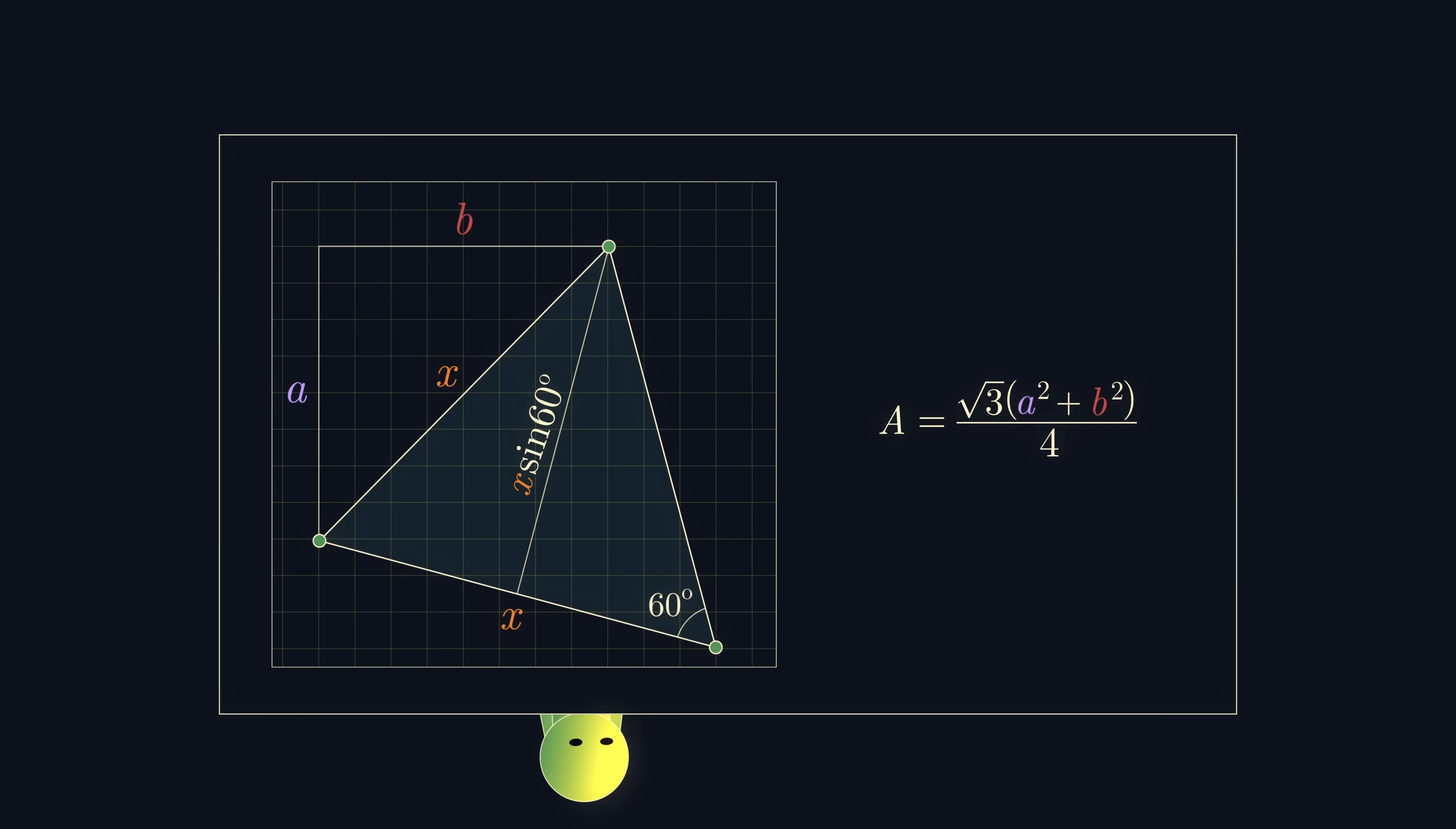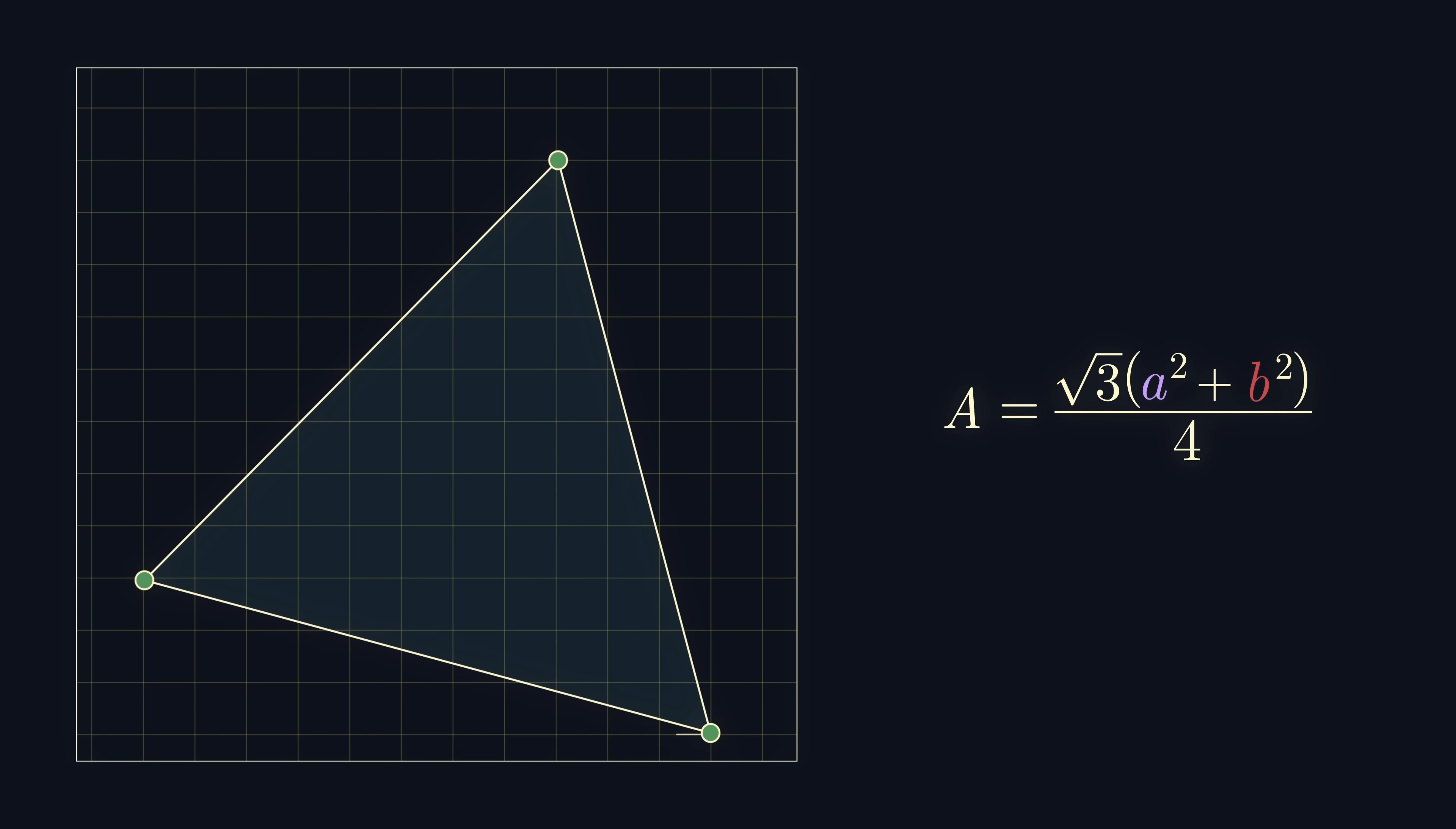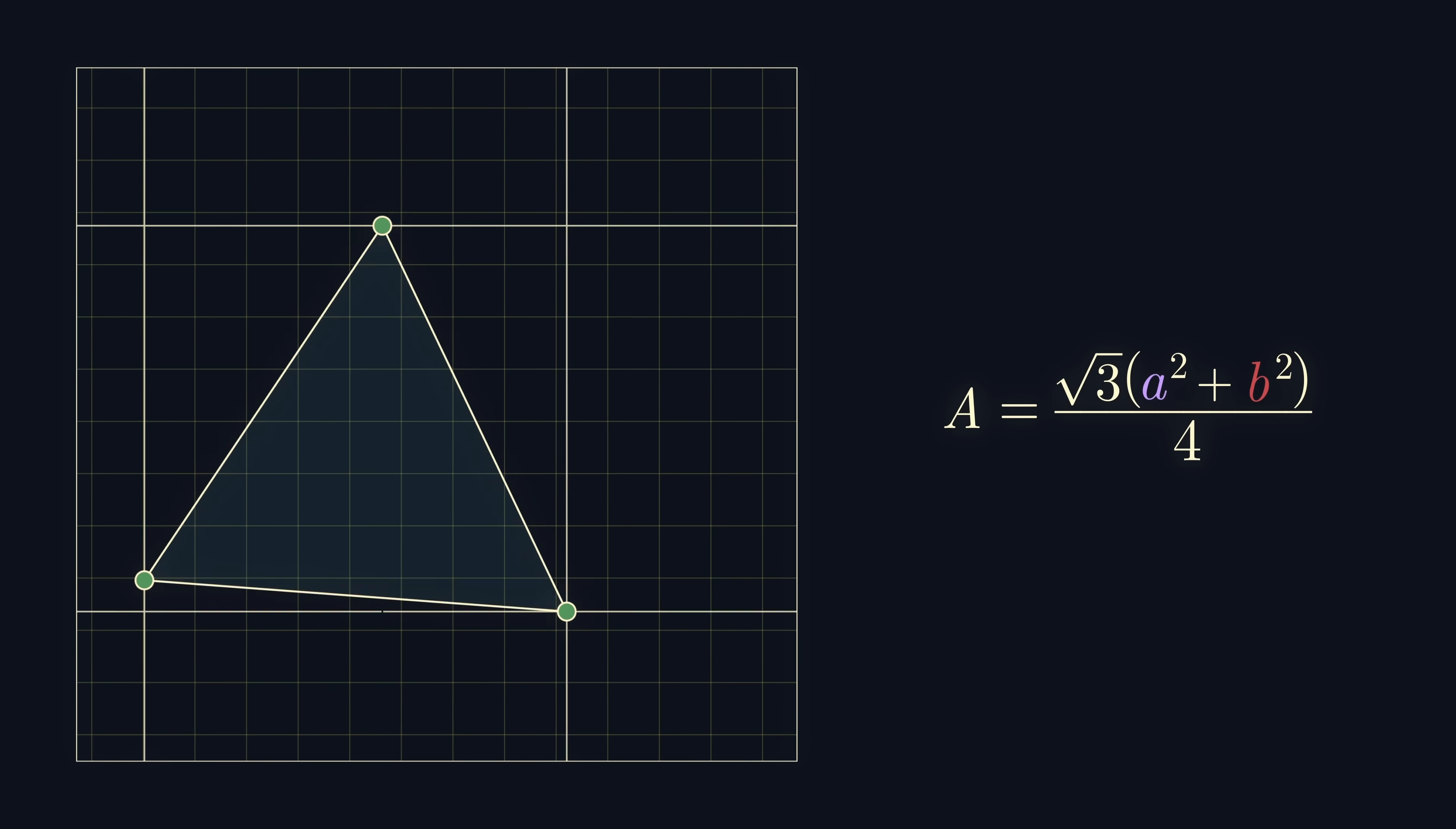But hold on a minute. There's something inherently rational feeling about shapes with integer coordinates. And indeed, you'd be right to suspect such a thing. Imagine drawing a rectangle whose perimeter contains the vertices of the triangle. If you're not convinced that such a rectangle always exists, you can imagine drawing a horizontal and vertical line through each of our three vertices, and then deleting the line which lies between the other two.